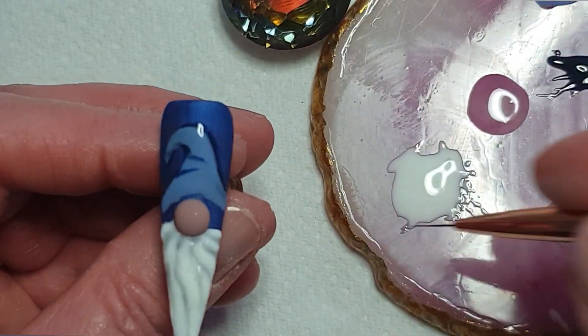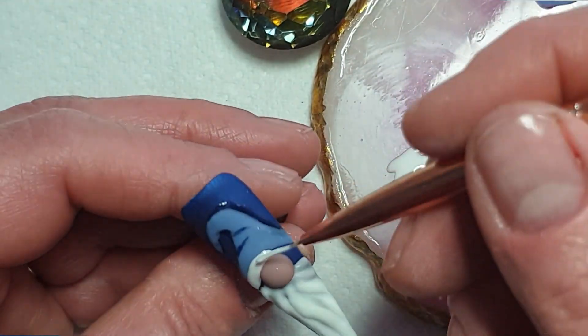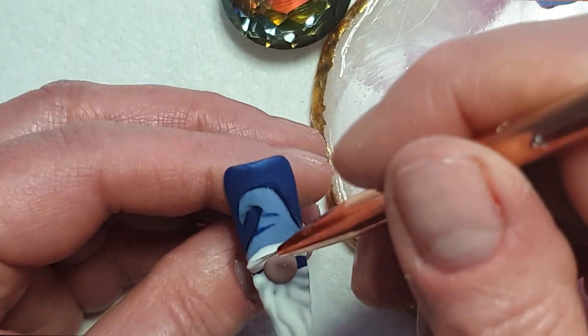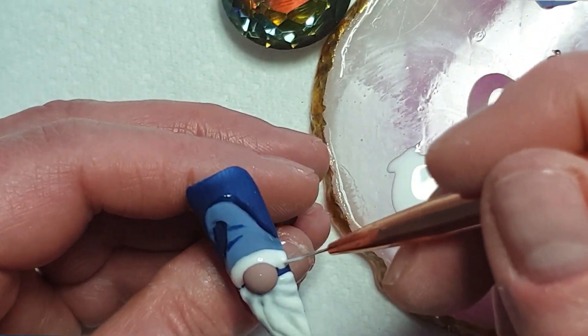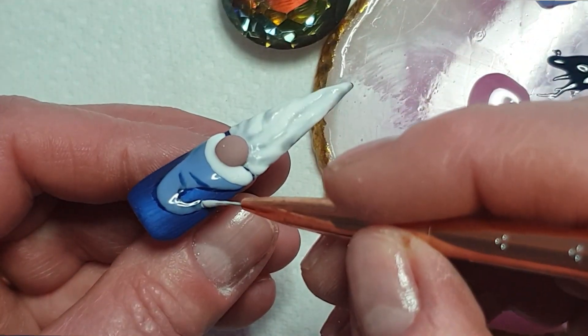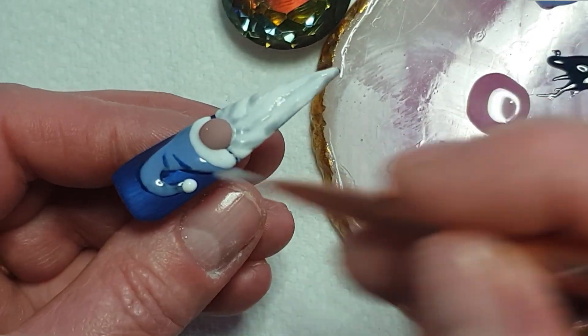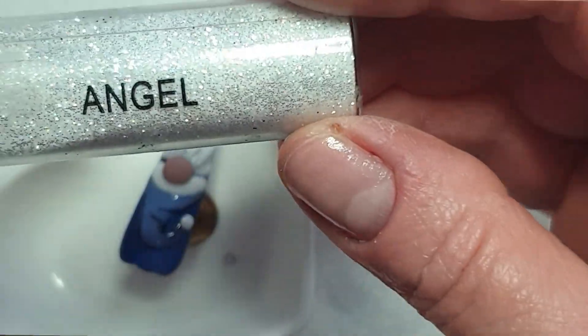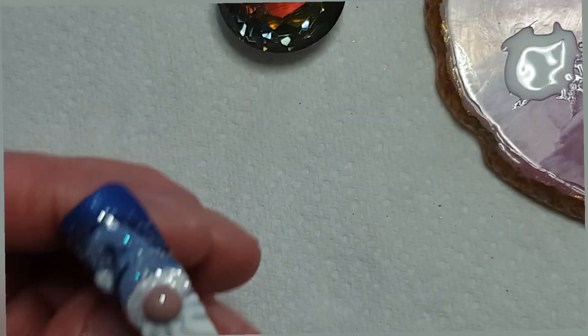And again, making sure there's no tackiness there. And we're going back in with the bob to the trim for his hat. And I have some magpie glitter in Angel. Just tapping a bit into the lid and using that to sprinkle over the wet bob before I cure it.